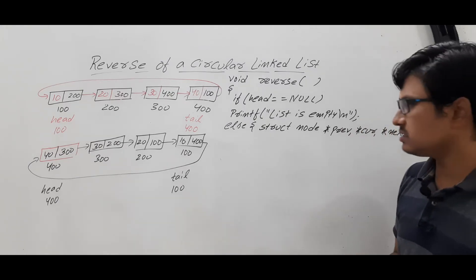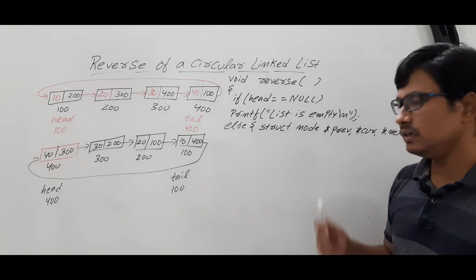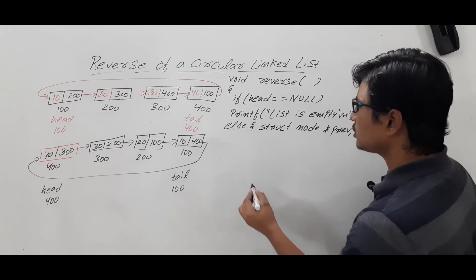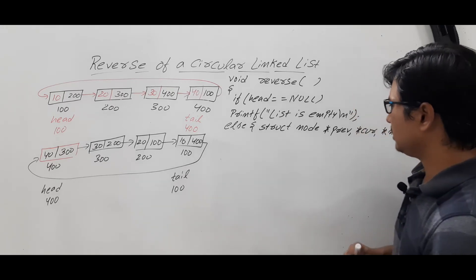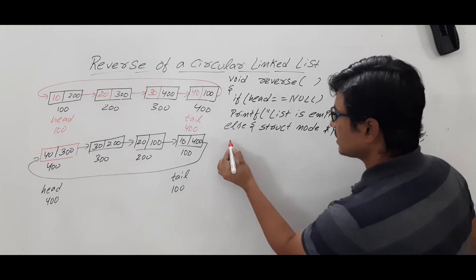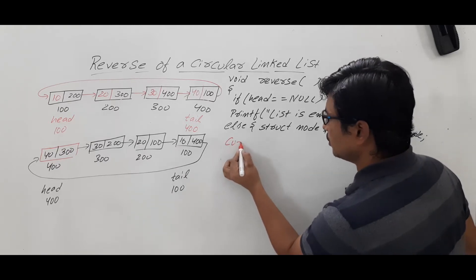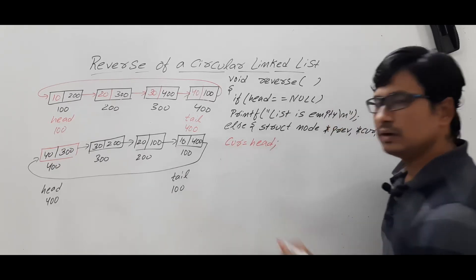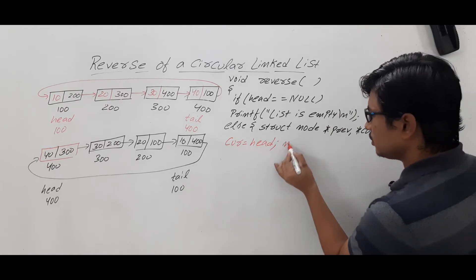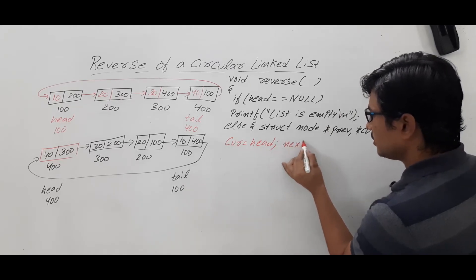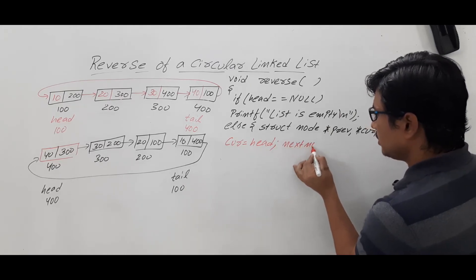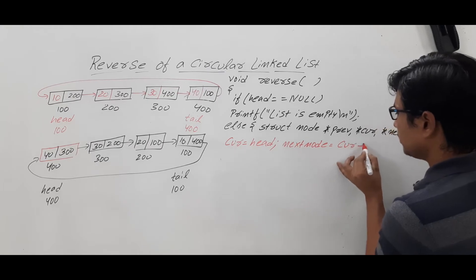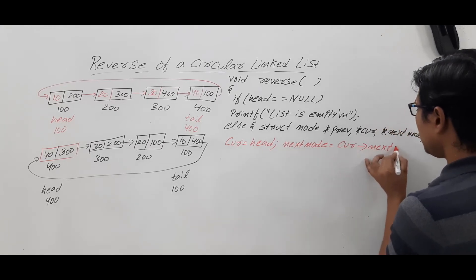Then write: current node is equal to head, and next node is equal to current node's next. What is the meaning? Current is equal to head — head has the value 100, so current will have 100. Then next node is equal to current of next, which is 200. So next node gets 200.